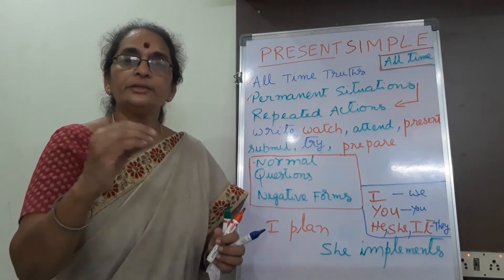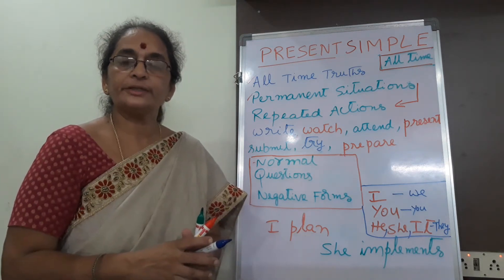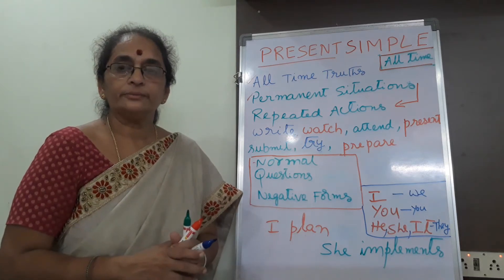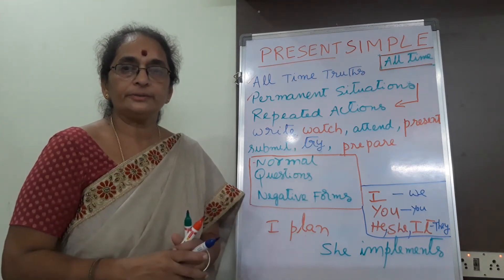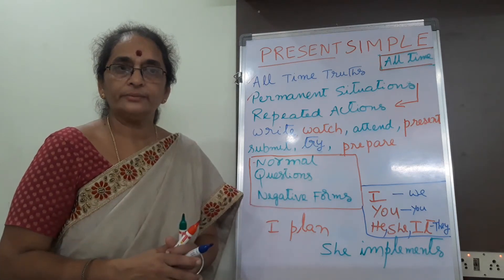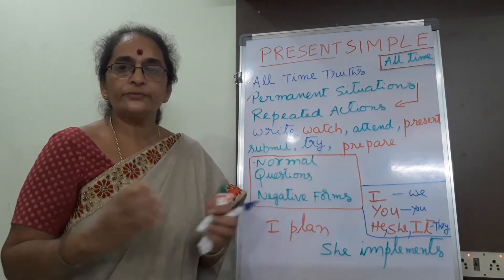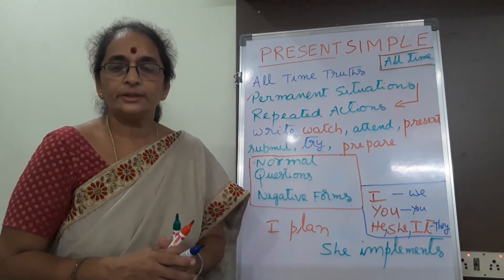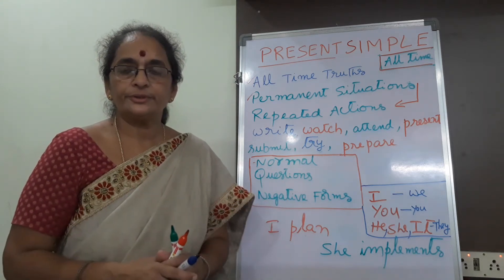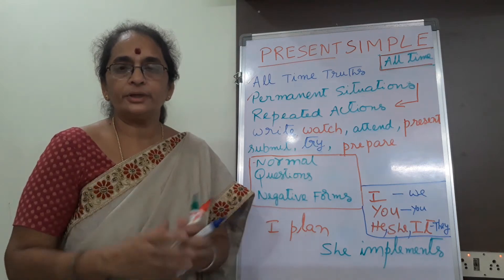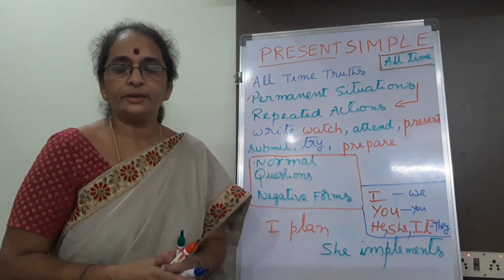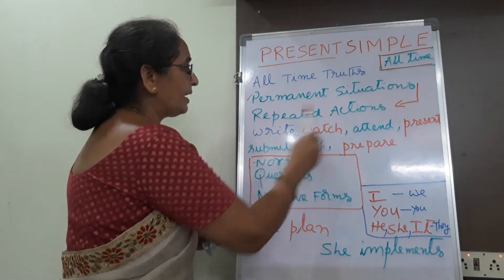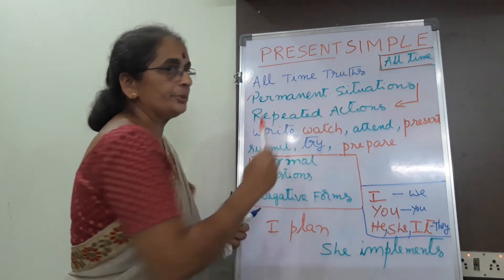He writes a project report. Father goes for walking. You run fast. He doesn't like coffee. I go for swimming. They prepare the project. I plan my trips. The college reopens after summer break. All these actions are permanent, repeated actions, permanent situations.